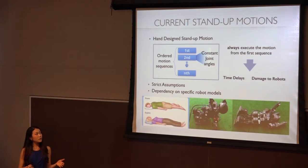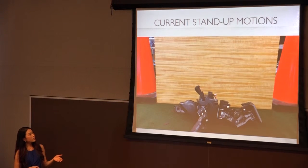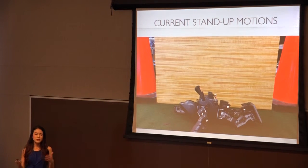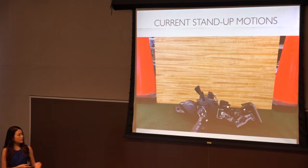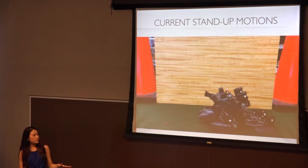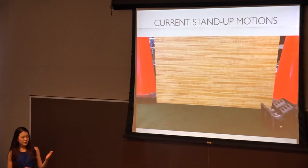Another drawback of current stand-up motions is they are dependent on specific robot models, so it is not easy to apply to other robots. I'll show a short video example of hand-designed stand-up motions. This is the robot we have in our lab, and one of the previous PhD students hand-designed the stand-up motions with this robot. These are random initial positions, and you can see it has to go back to certain initial positions to execute the stand-up motions.